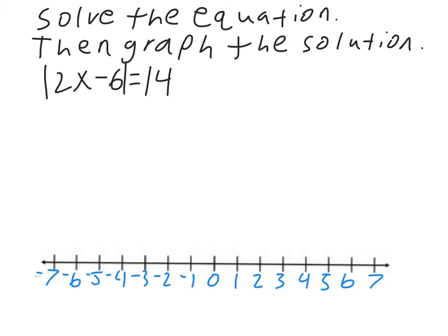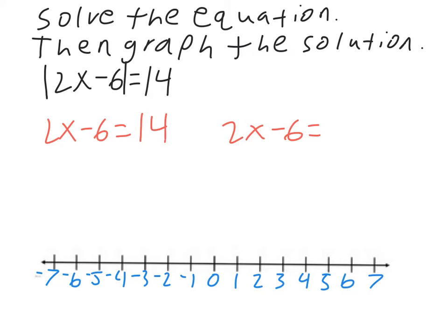Here's another equation. Again, solve the equation then graph the solution. We have the absolute value of 2x minus 6, and that equals 14. So to get rid of the absolute value, we rewrite the equation twice: 2x minus 6 equals 14, and 2x minus 6 equals negative 14.